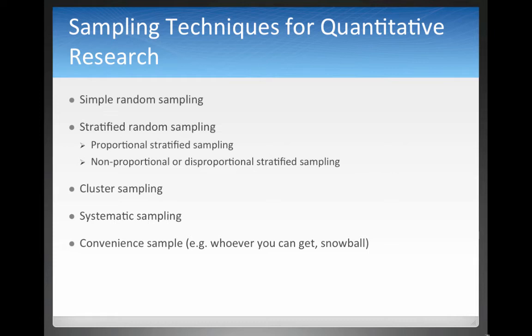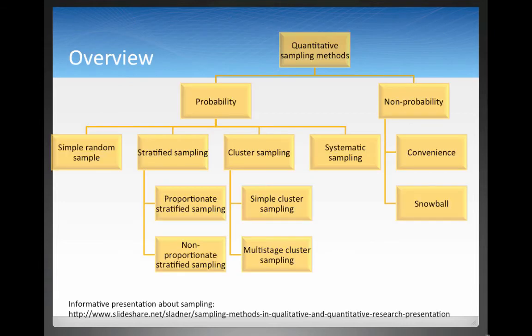Cluster sampling is when you sample a group of people. For example, if you sample a classroom, you're not just taking one person — you're sampling a cluster of people. Here's an overview of the quantitative sampling methods. The two broadest distinctions are probability sampling and non-probability sampling.